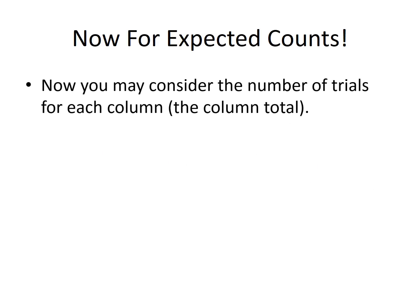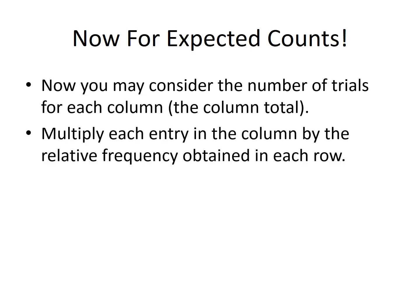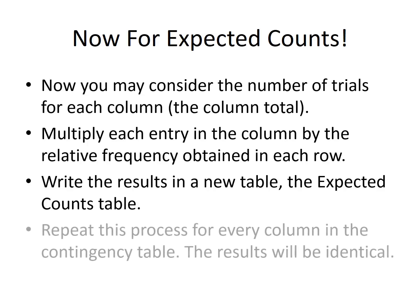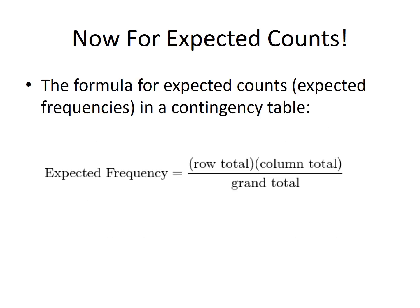You may also consider the number of trials for each column — the column totals — instead of the rows. You would still multiply each entry in the column by the relative frequency obtained in each row, write the results in a new expected counts table, and repeat this process for every column in the contingency table. The results will be identical. The formula for expected counts in a contingency table is: take the row total, multiply by the column total, and divide that product by the grand total — and you do this for every cell.